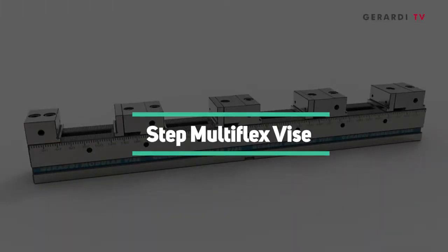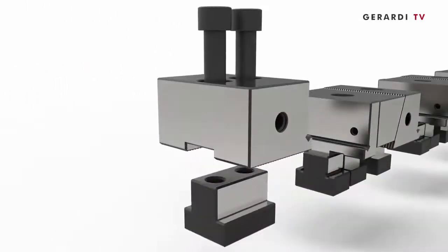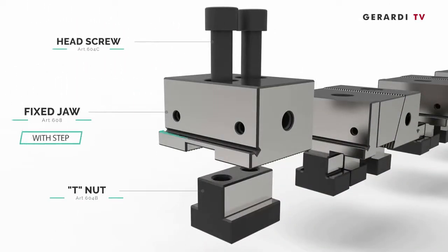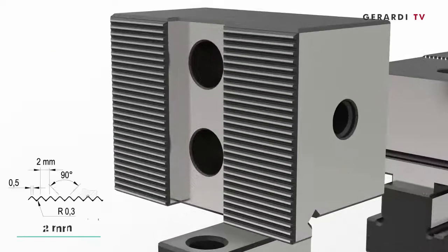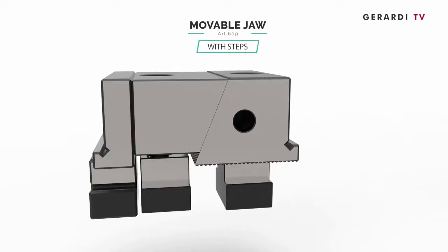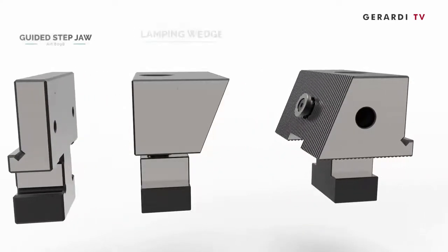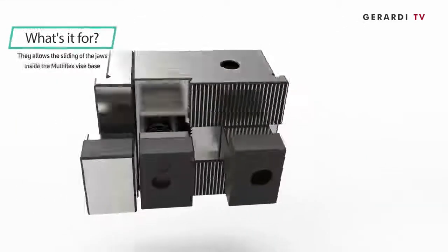Step Multiflex vise has the possibility to clamp workpieces on the jaws integral steps. Of course, the clamping and the alignment precision is still the same, it results from the ground rack width 2mm pitch.